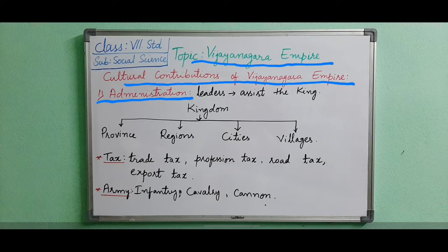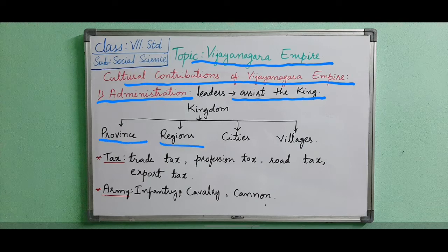Decentralized means authority which one person is having. In their administration, there were different ministers to assist the kings and leaders in the local provinces. Their kingdom was divided into different provinces, provinces into regions, regions into cities, and cities into villages. So we can say they had a four-level administrative system.